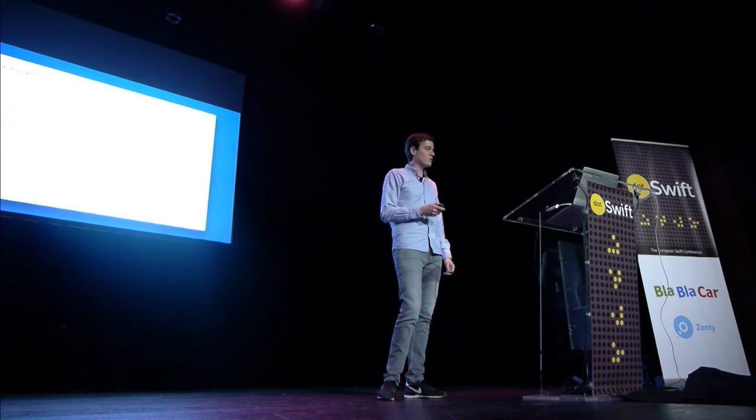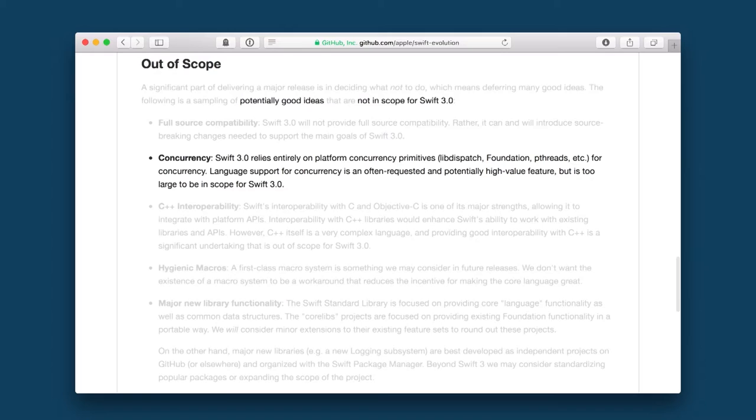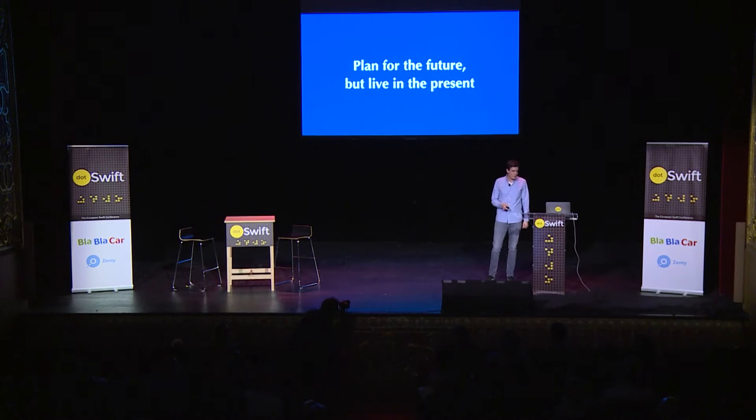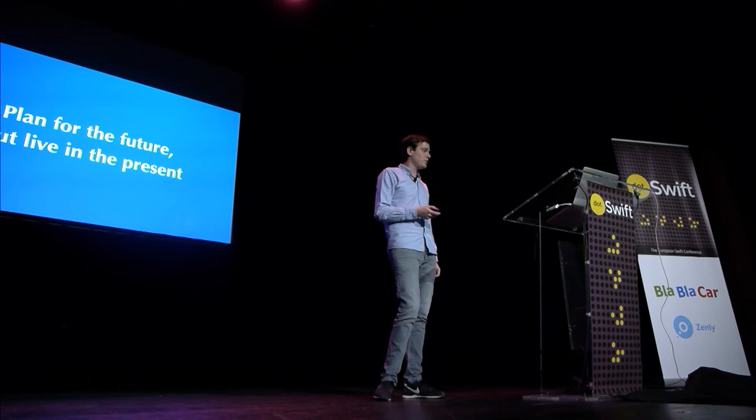So Swift went open source, and then there was this on the list: out of scope for Swift 3 is concurrency. And concurrency is something you need to be able to do good asynchronous programming in the language. I thought this is a good and a bad thing — at least they think it's important enough to mention on the list, but it also means it won't be relevant for the next half year. So what I'm trying to do is two things: make the best future implementation for the current version of Swift, and plan for how I'd like to see futures in Swift 4 or 5.